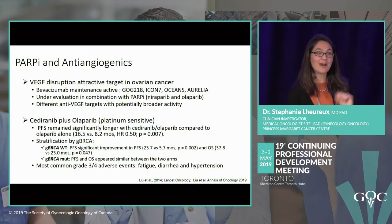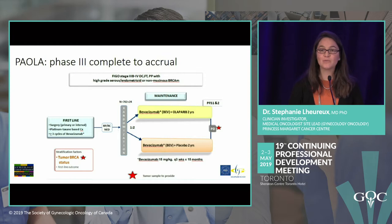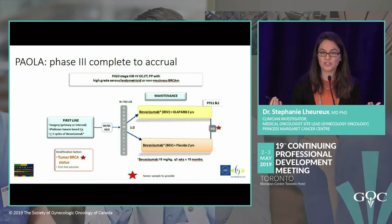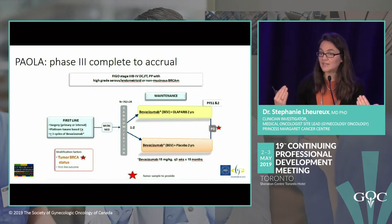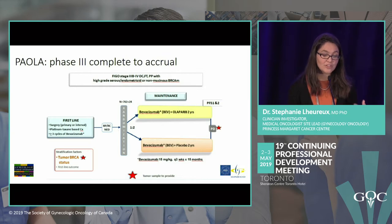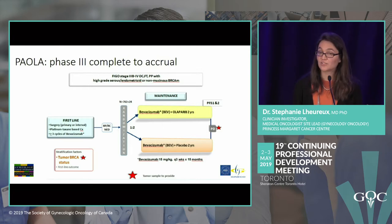The combination of olaparib and cediranib comes with added side effects including fatigue, diarrhea, and hypertension. Multiple ongoing trials will soon report results. An important trial to watch is in the first-line setting, asking what to do for BRCA mutation patients who also received bevacizumab. This trial randomizes patients between olaparib plus bevacizumab versus bevacizumab alone.